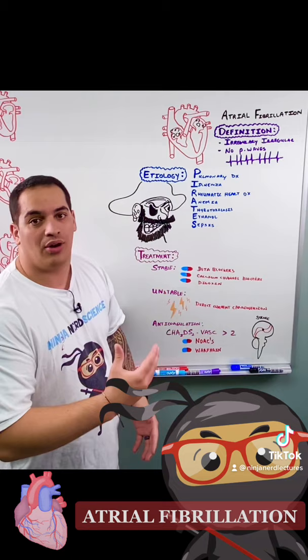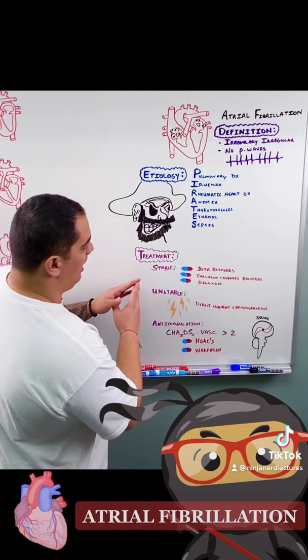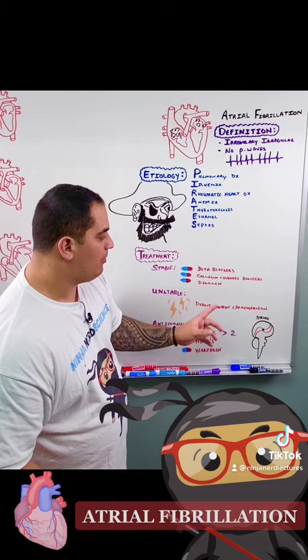Now how do we treat atrial fibrillation? It depends if they're stable or unstable. If they're stable you can rate control them with an option of beta blockers, calcium channel blockers, or digoxin. If they're unstable you shock them with direct current cardioversion.